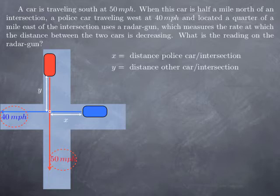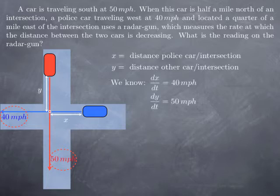With these notations, the interpretation for the speeds is that dx over dt, the rate of change of the position of the police car with respect to the intersection, is the speed of the police car, in other words 40 miles per hour. On the other hand, y here represents the position of the red car at time t and therefore dy over dt is 50 miles per hour.